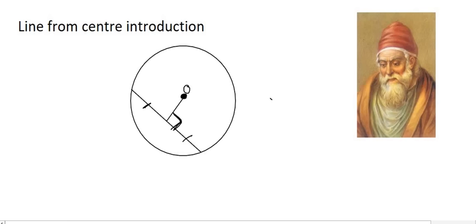And so that was one of Euclid's first circle geometry theorems. So he said that this angle will always be 90 degrees as long as the line from the center goes to the midpoint.